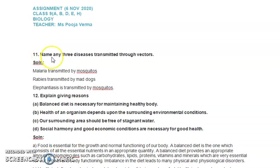Question 11: Name any three diseases transmitted through vectors. You are already aware that vectors are animals that carry diseases from an infected person to a healthy or normal one. There are a lot of vectors, so let's look at the most common ones.